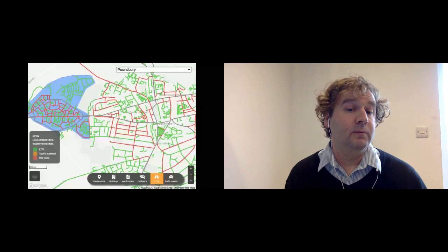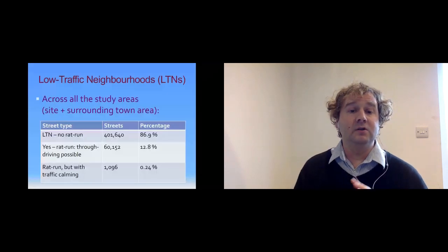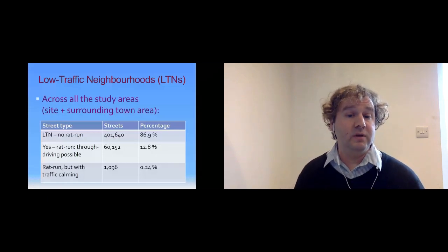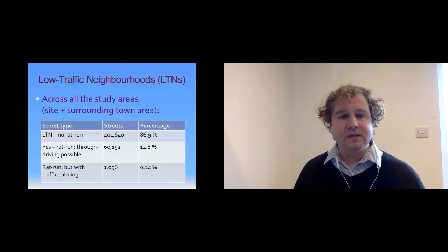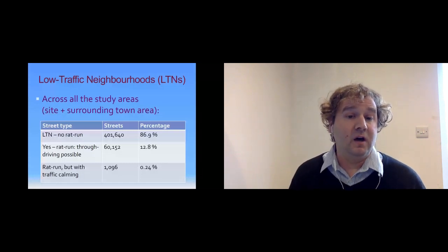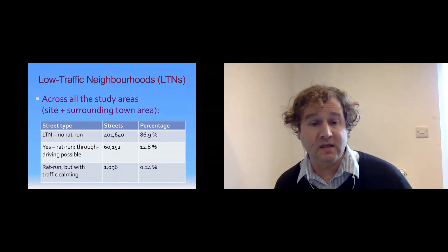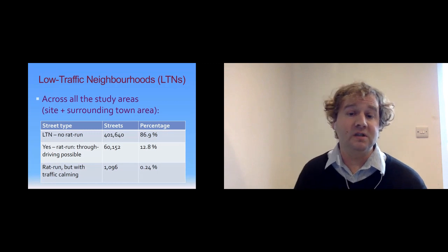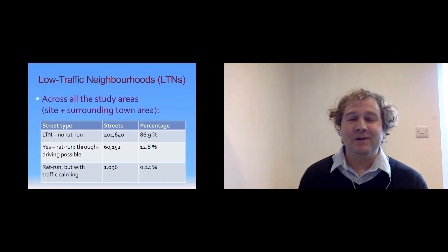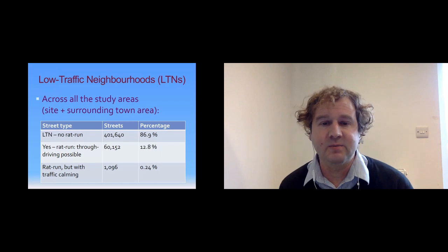Across all 35 areas — whole cities, not just the sites — 86.9% of streets are not rat runs; rat runs exist in only 12.8% of streets; and a very small number have traffic calming. The traffic calming data in OpenStreetMap does need some improvement, but this shows the vast majority of streets are essentially already low traffic neighborhoods. We've made this available within the tool as one of the buttons at the bottom, and we can generate further such analyses for your local authority area on request.